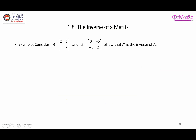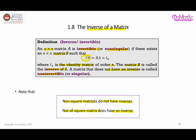Let's look at a simple example to illustrate the idea of inverse of a matrix. We have matrix A defined as such and another matrix A' defined as such. The question asks you to demonstrate that A' is the inverse of A. To do that, you need to multiply the two matrices together and see whether the result gives you an identity matrix of the same size n.